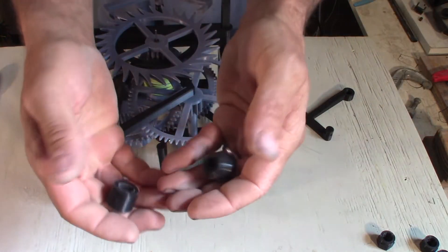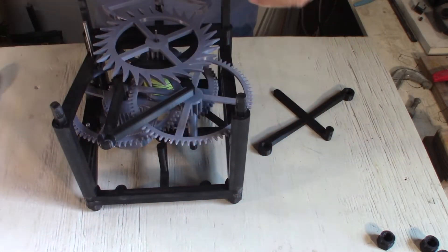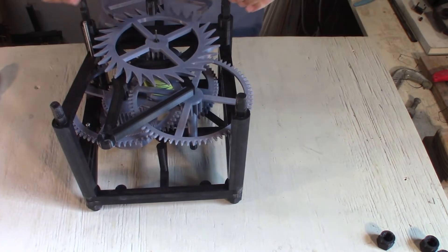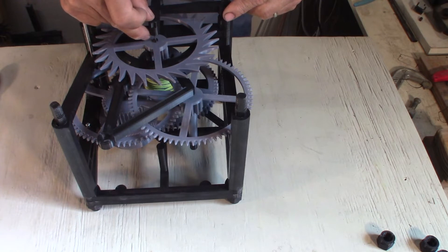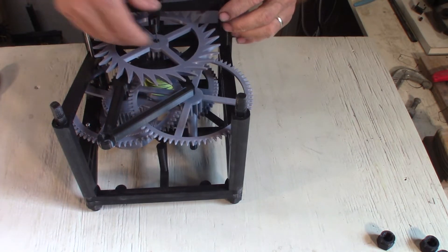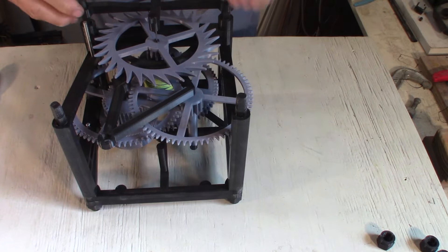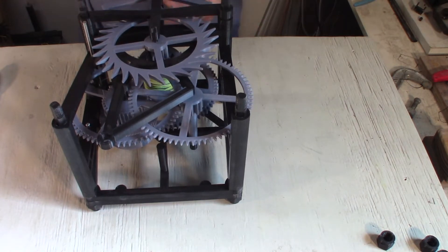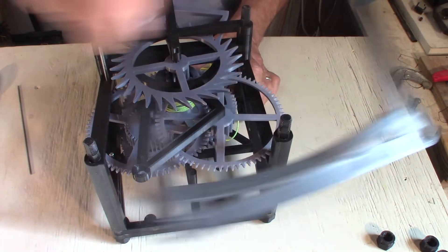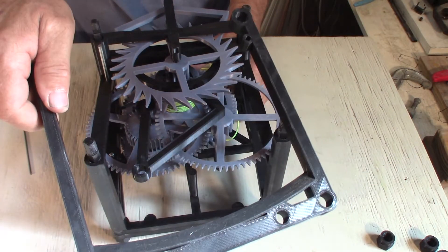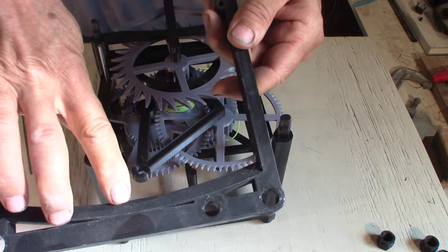Before I do that, there's two 16 millimeter back spacers. There's also a two millimeter washer on the back of the escape wheel here. You can line up the axis.